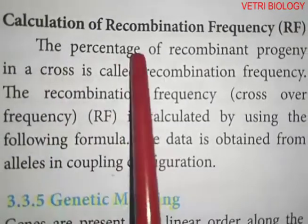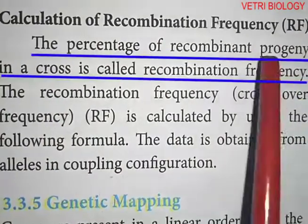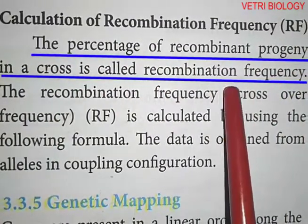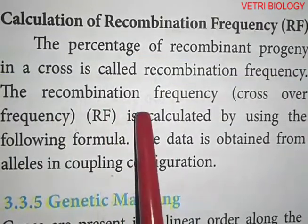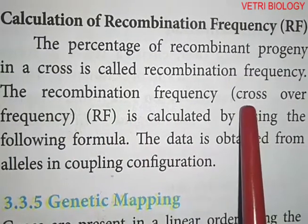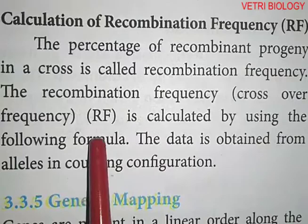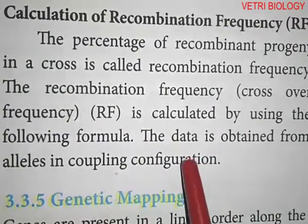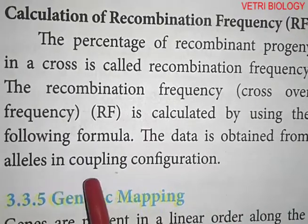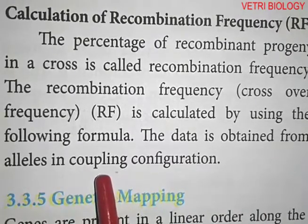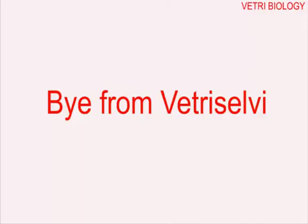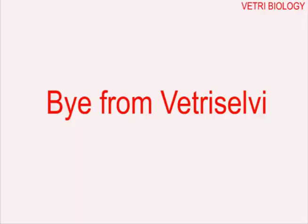Calculation of recombination frequency. The percentage of recombinant progeny in a cross is called recombination frequency. The recombination frequency, also called crossover frequency (rf), is calculated using a formula based on data obtained from alleles in coupling configuration.